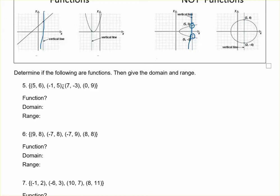For problem five, check if every x value has one and only one y value. Five has the y value of six, negative one has the y value of five, seven has the y value of negative three, and zero also has a y value. This is a function because each x value is matched to one and only one y value. For the domain, list all the x values in order from least to greatest, and do the same for the range. If any numbers show up twice, just write them once.